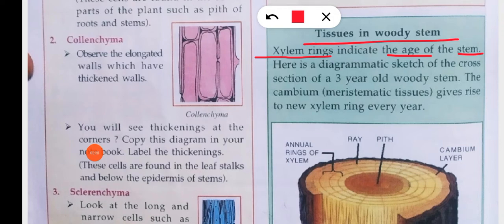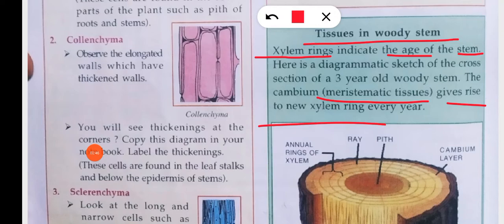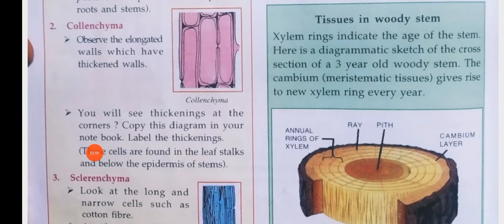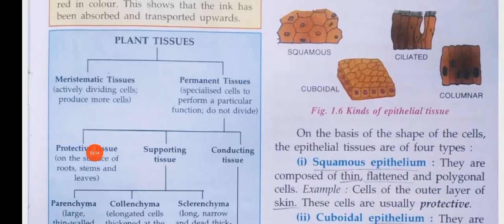There is a diagrammatic sketch of a three-year-old woody stem. The cambium — a type of meristematic tissue — produces a new xylem ring every year. You will see the outer bark, inner rings, and rays. If you cut the stem of any tree, you will see the rings. The number of xylem rings tells you the tree's age.